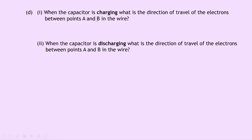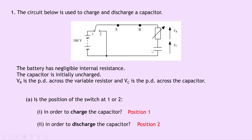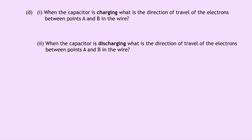Part D1 asks for the direction of travel of electrons between points A and B when the capacitor is charging. Looking at the diagram, when the switch is at position 1 and the capacitor is charging, the current flows through the capacitor, through the variable resistor, reaches B first, and then passes through A. So we can say that the current flows from B to A.